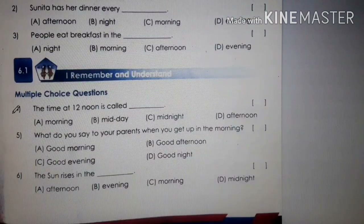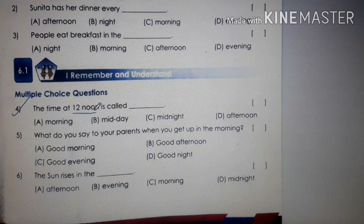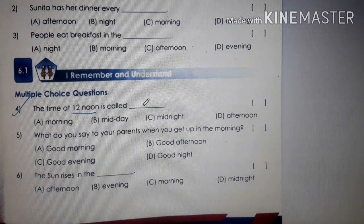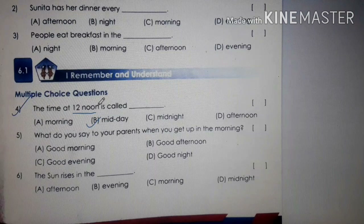Let's start with question 4. The time at 12 noon. 12 noon means 12 o'clock during the daytime. Is it morning? No. Is it midnight? No. Is it afternoon? No. It is midday — 12 noon is also called midday.